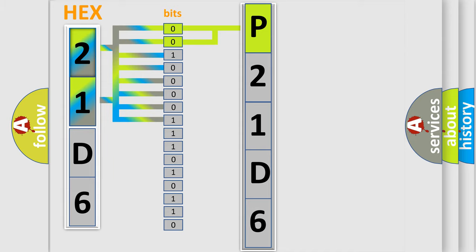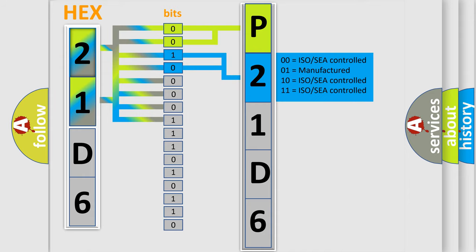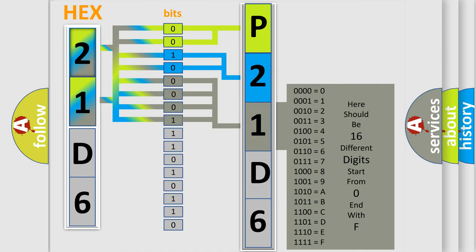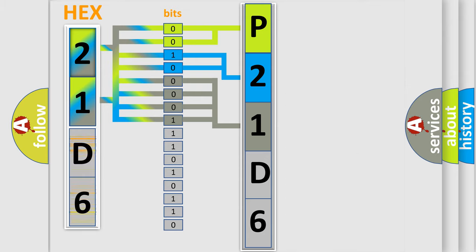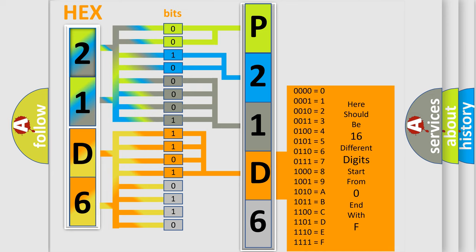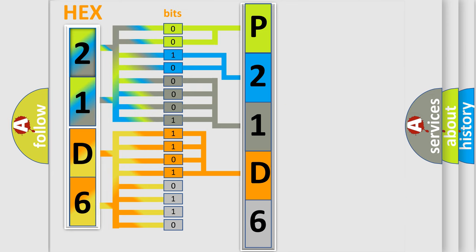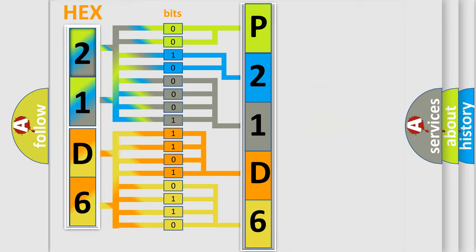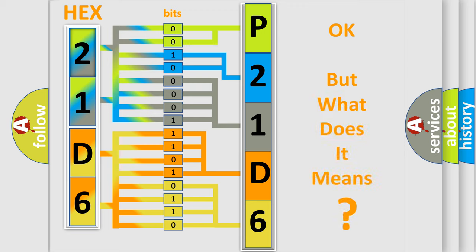The next two bits determine the second character. The last four bits of the first byte define the third character of the code. The second byte is composed of a combination of eight bits. The first four bits determine the fourth character of the code, and the combination of the last four bits defines the fifth character. A single byte conceals 256 possible combinations. We now know in what way the diagnostic tool translates the received information into a more comprehensible format. The number itself does not make sense to us if we cannot assign information about what it actually expresses.